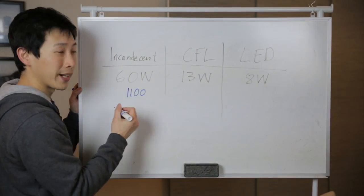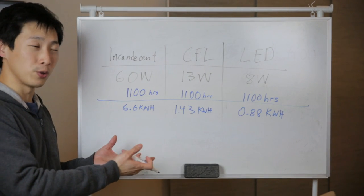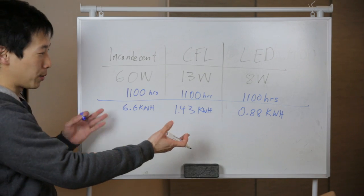So let's just multiply that by 1100 hours. And voila, you have the typical amount of electricity you would use per year using these kind of light bulbs.